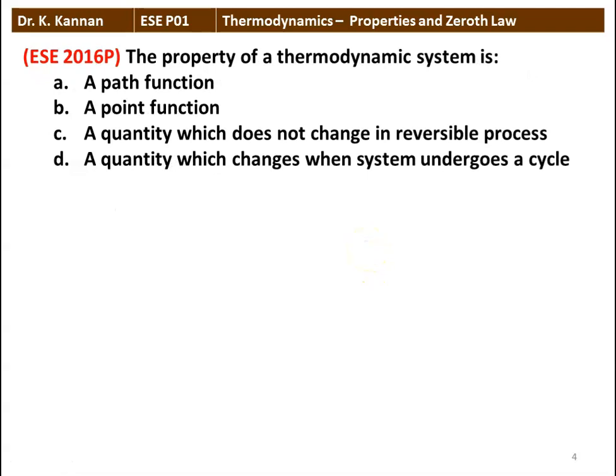Next question: the property of a thermodynamic system is a path function, point function, a quantity which does not change in a reversible process, or a quantity which changes when the system undergoes a cycle. Basically, the property of a thermodynamic system is a point function. The correct answer is point function — the property of a thermodynamic system is a point function.